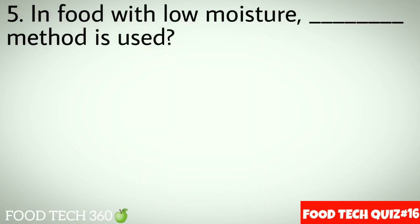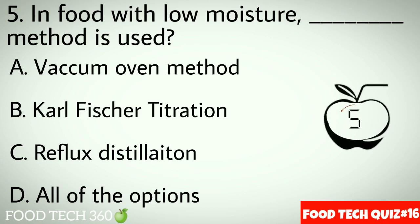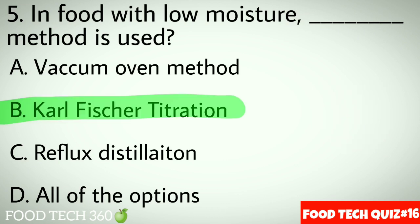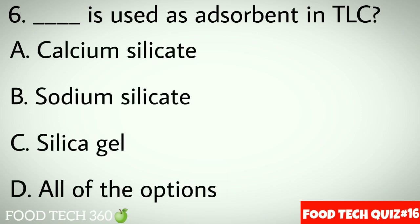Question No.5: In food with low moisture, dash method is used. Options A: Vacuum oven method. B: Carl Fischer titration. C: Reflex distillation. D: All of the options. Correct answer B: Carl Fischer titration.